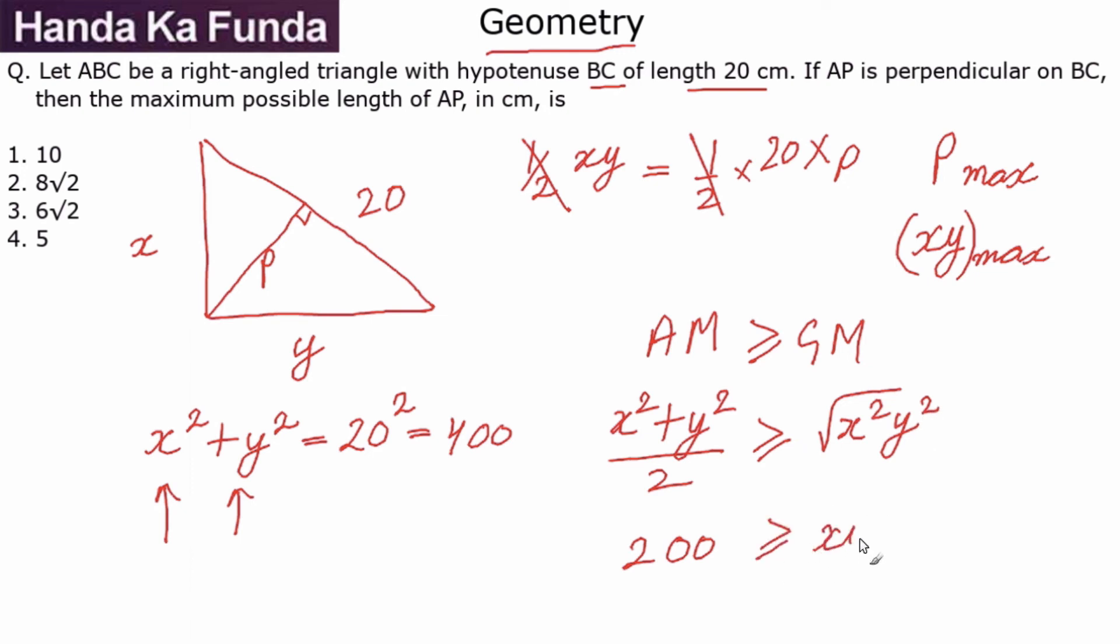So now I know that the maximum value of XY is 200. Or I can simply replace this XY with 20P, or I will get my new equation as 20P is less than or equal to 200, or my perpendicular is less than or equal to 10. That is what was asked: maximum possible length of AP. Maximum possible length of the perpendicular, we have gotten that P ≤ 10.